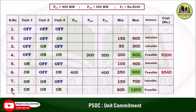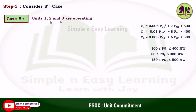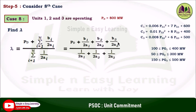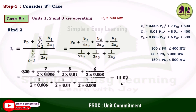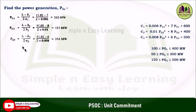Now for the eighth case, all three units are running. Unit 1, 2, and 3 are operating and demand is 800 megawatt. Find lambda using the formula with i equal to 1, 2, and 3, substituting all three terms and values from the cost functions, giving lambda equal to 11.02. Next find the power generation: pg1 equals lambda minus b1 over 2a1, giving 335 megawatt, which is within the limit. pg2 gives 151 megawatt, also within limits, and pg3 gives 314 megawatt, also within limits.